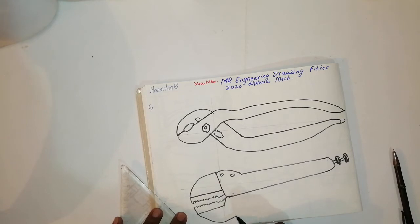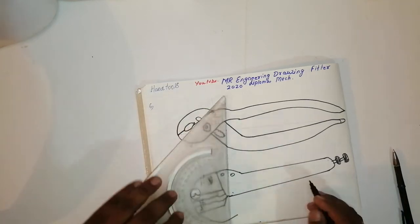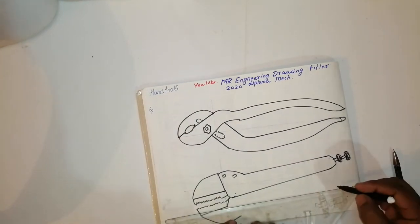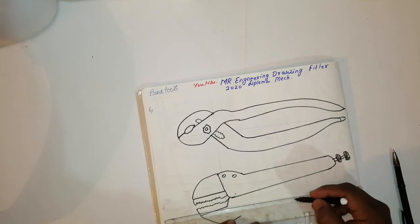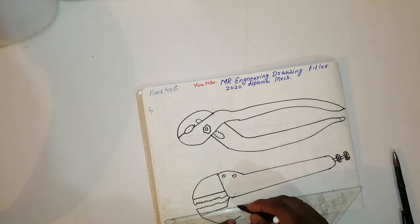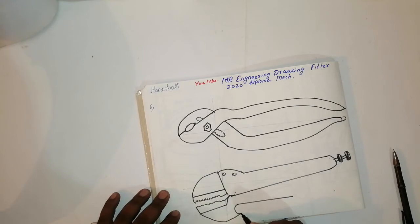Then join one line between here, then join a circle like this.